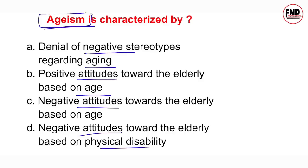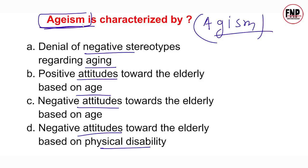Ageism ek stereotype discrimination hai jo ki old persons ke against kiya jata hai. Option C is correct here — yeh ek stereotype behavior hota hai jo ki old persons ke liye negative hota hai. Yaani ki jo log budhe hain, old age hain, elder people hain, unke liye hate ki bhaavna hoti hai. Negative attitude jo hota hai, usse hum ageism ka naam dete hain.